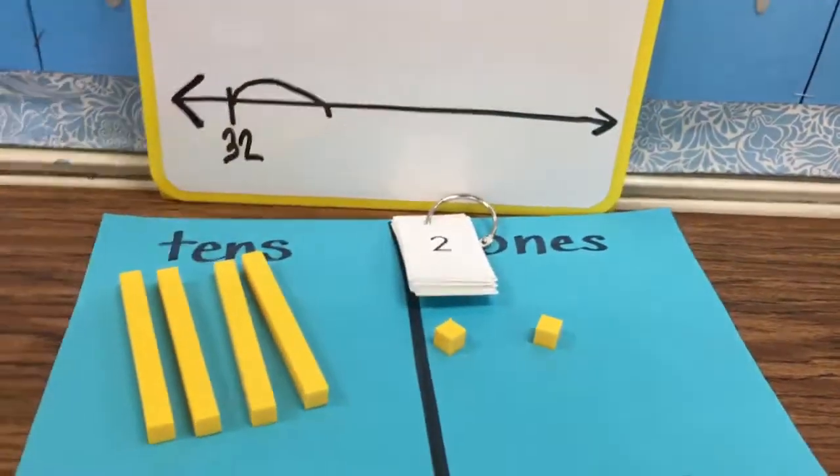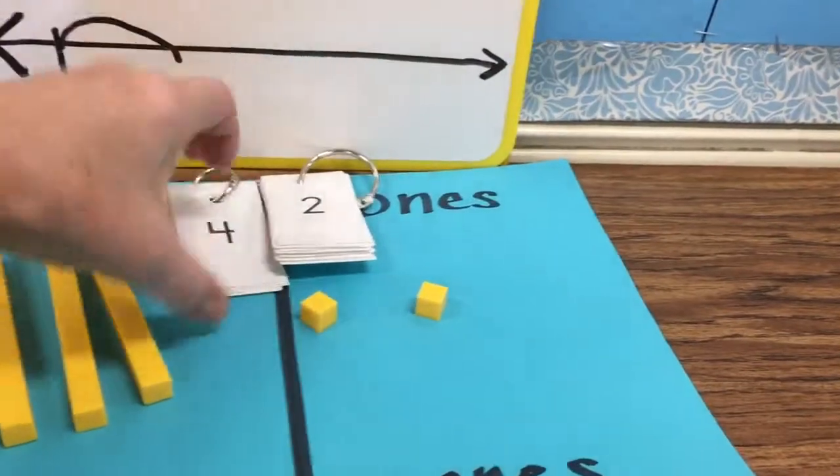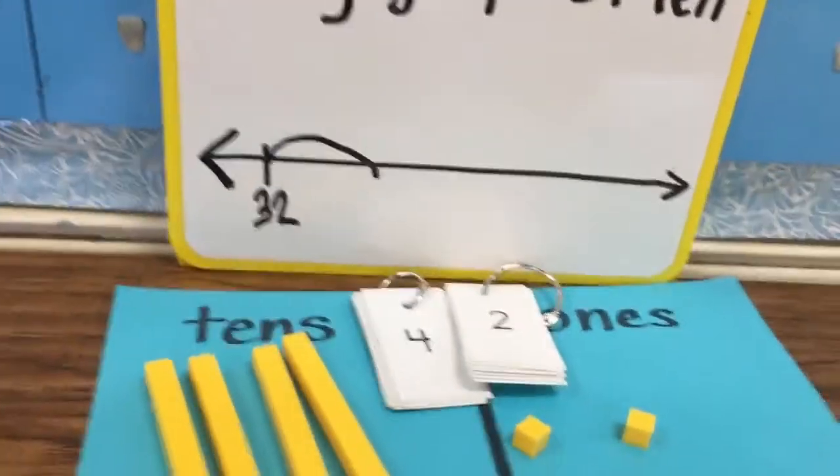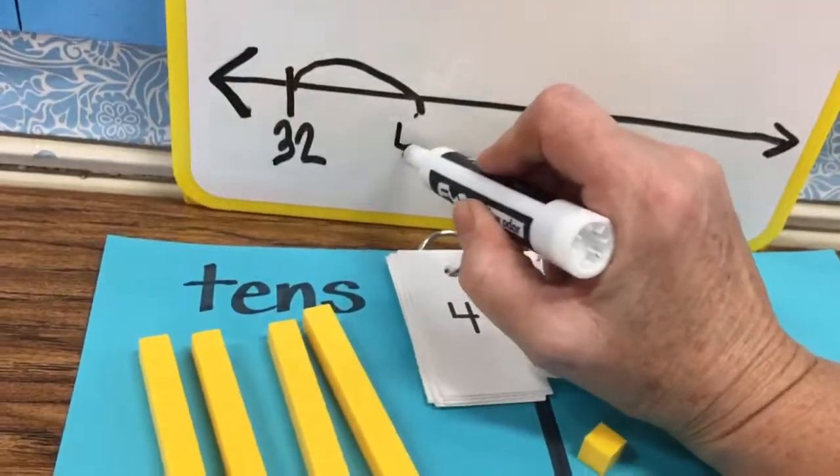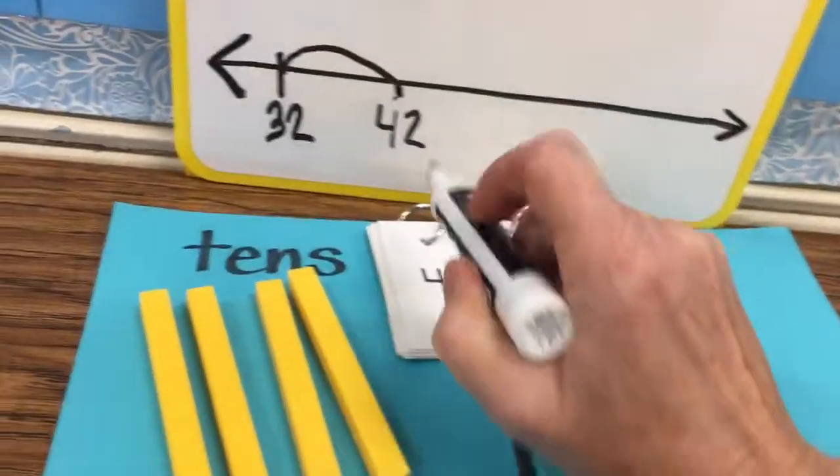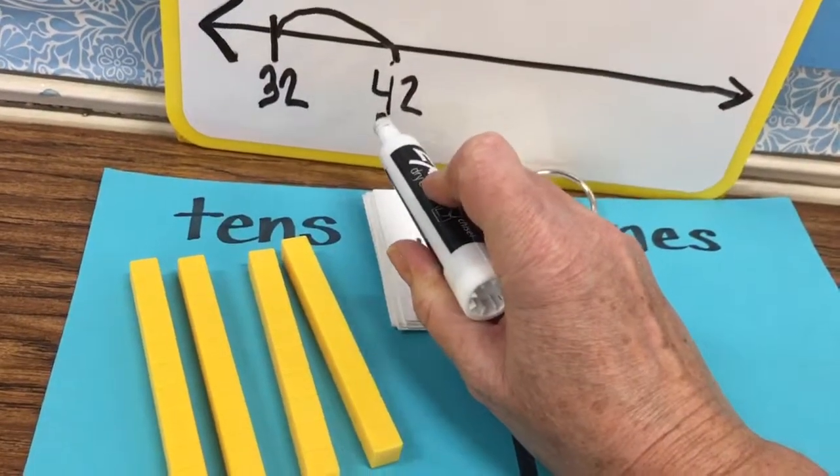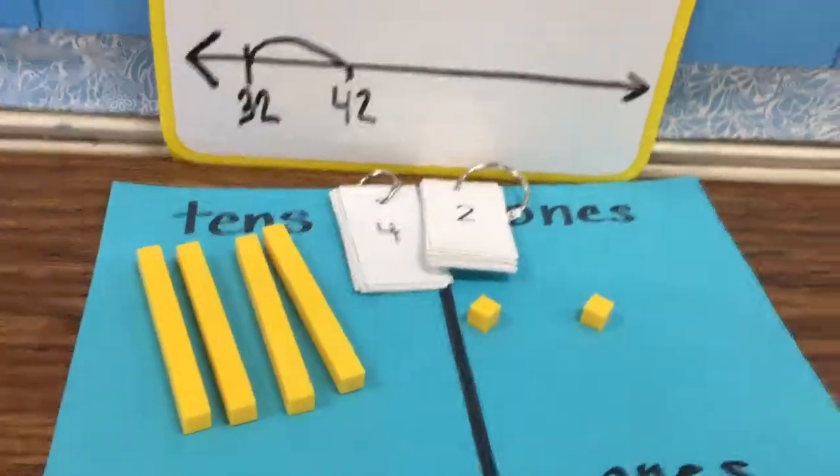My digit has changed now. I no longer have three tens, I have four tens. And as I jump ahead, I would show that my ones did not change. I still have two ones, but I have 10 more because I added a group of 10.